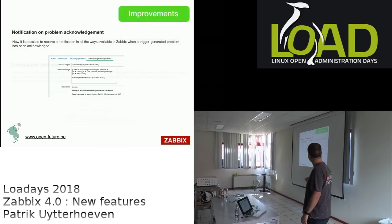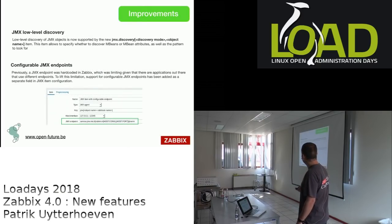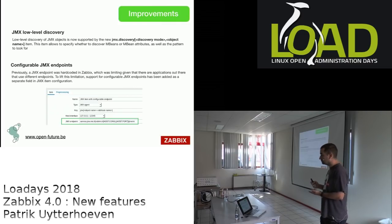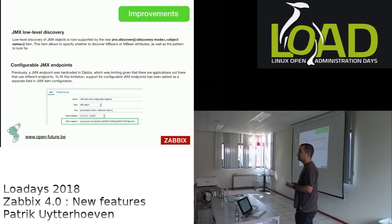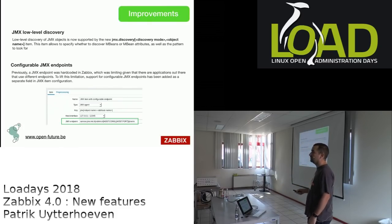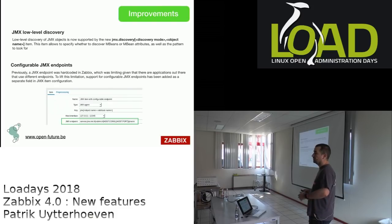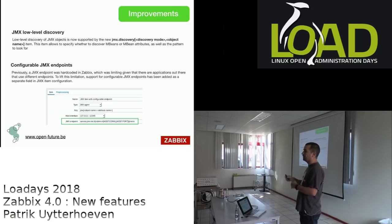JMX low-level discovery is also new in 4.0. You can discover MBeans or MBean attributes automatically — for example discovering all garbage collectors in a Java application. Since garbage collector names can change, low-level discovery automatically creates and removes items as they appear or disappear, eliminating the need for manual macro definitions.